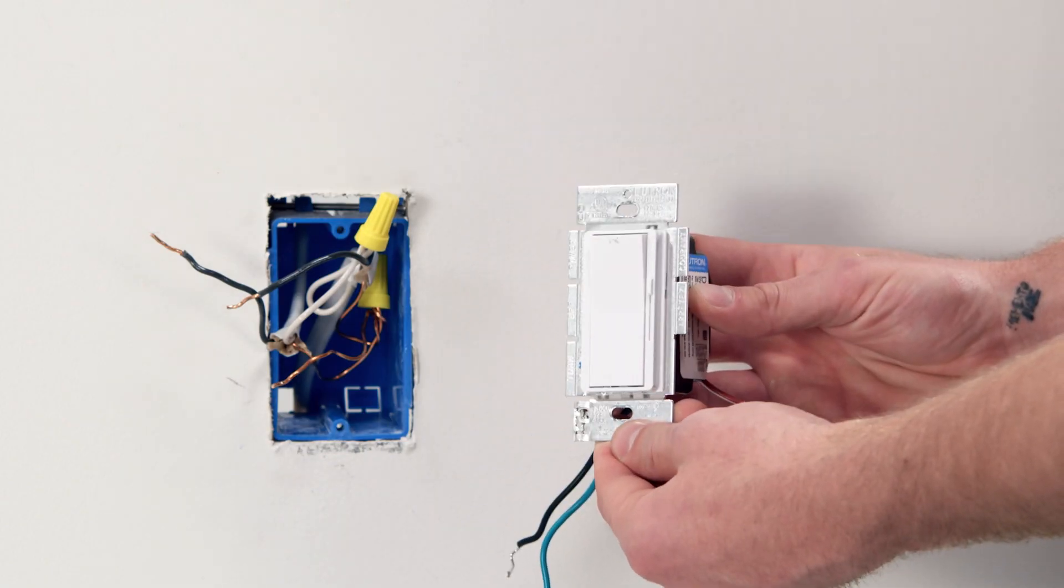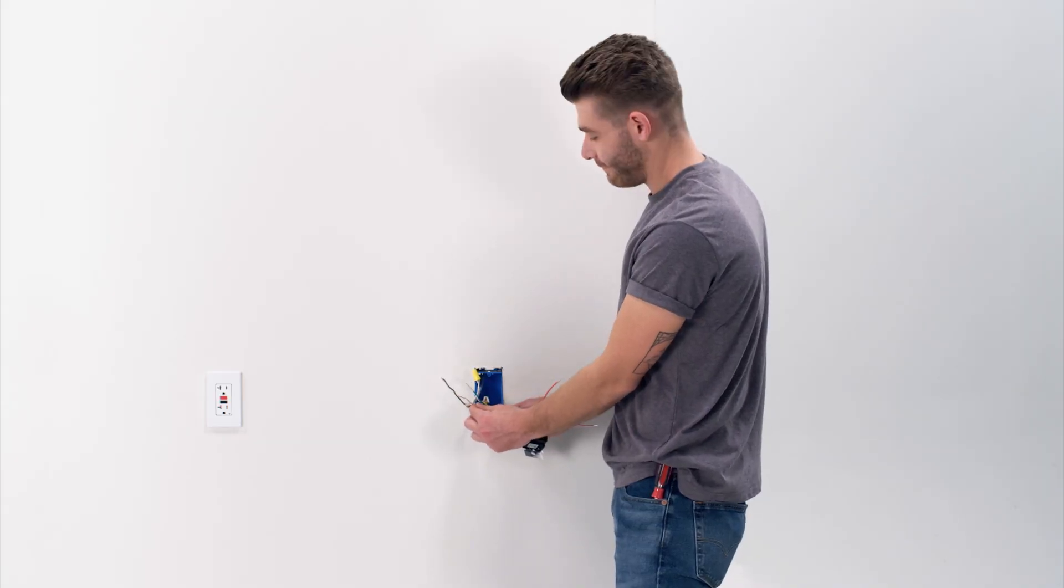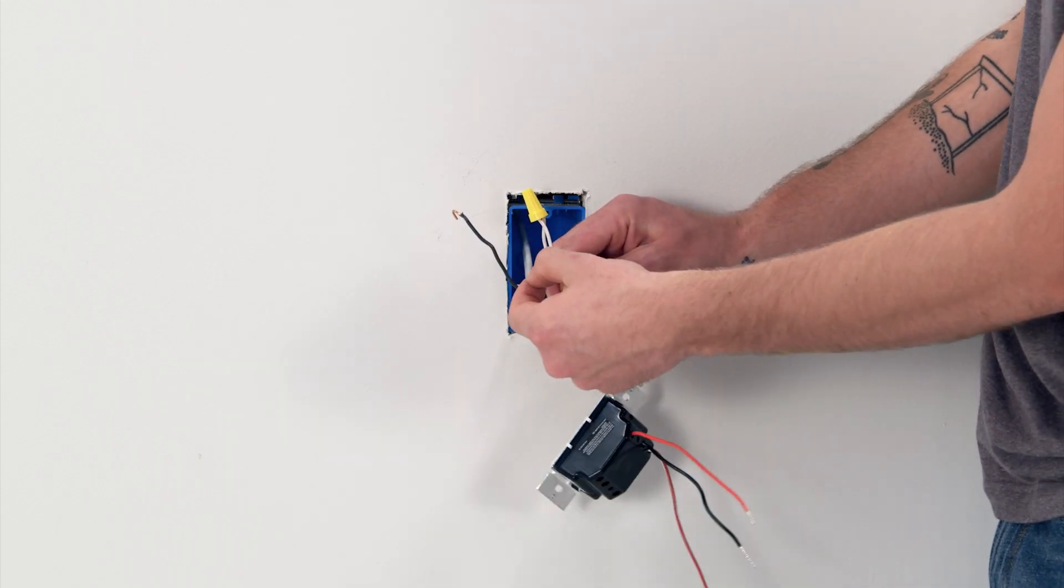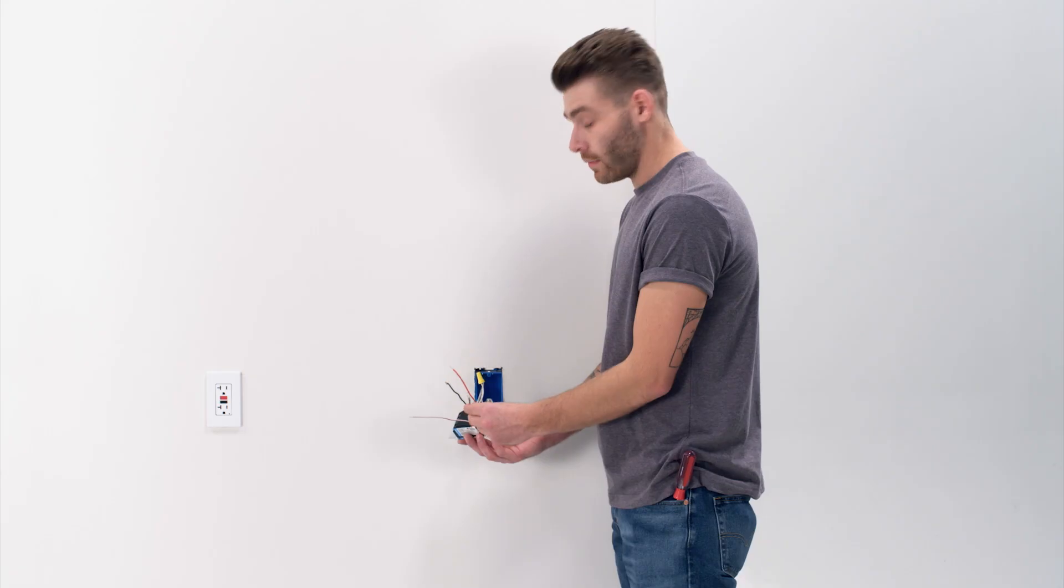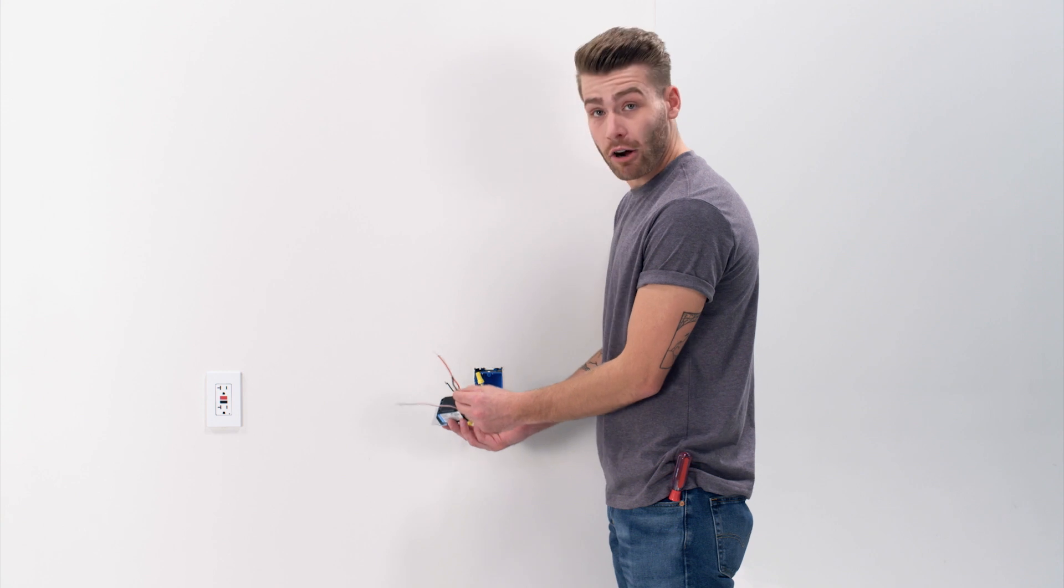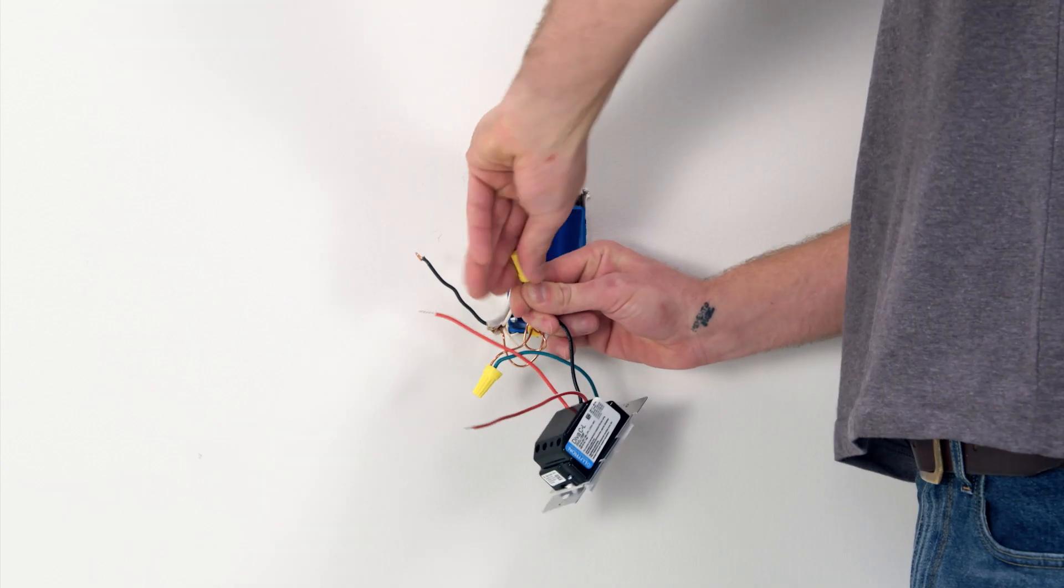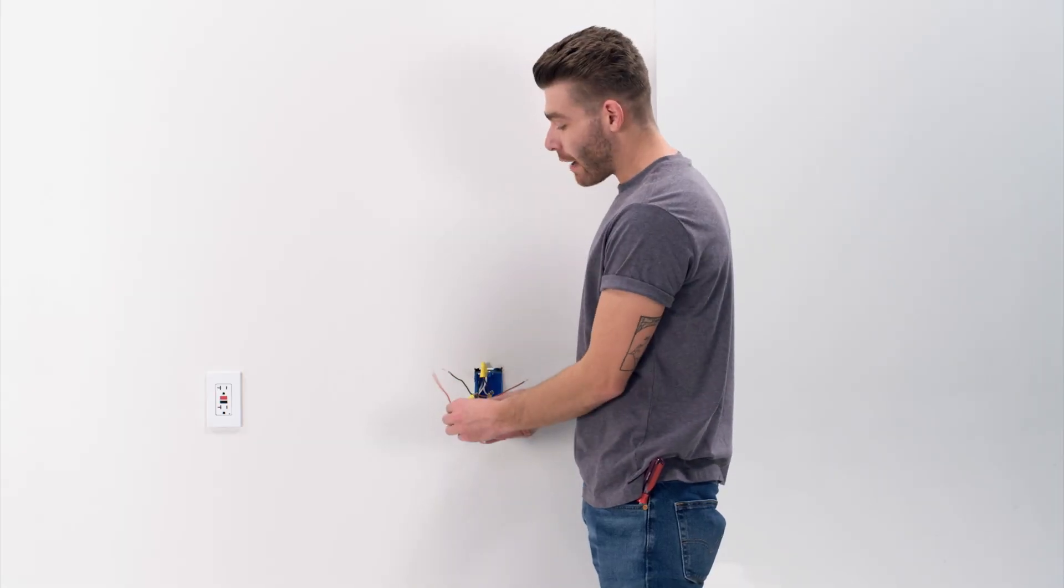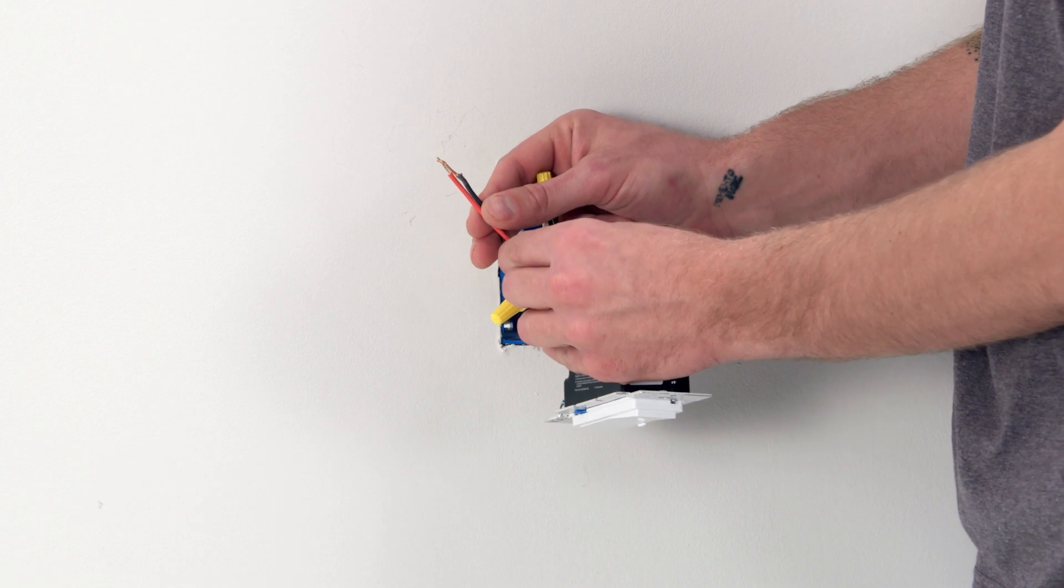And now it's time to install this new dimmer switch. First, ground to ground. And next, we'll take our black wire from the dimmer to the black lead wire from the wall. And finally, we'll attach the solid red wire from the dimmer to the black load wire coming from the wall.